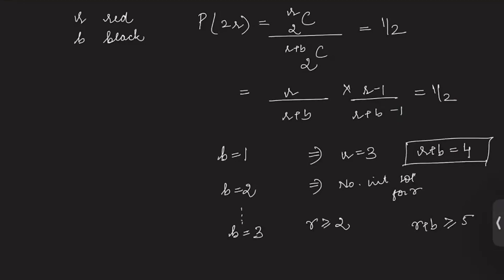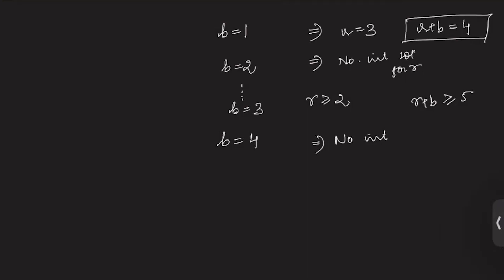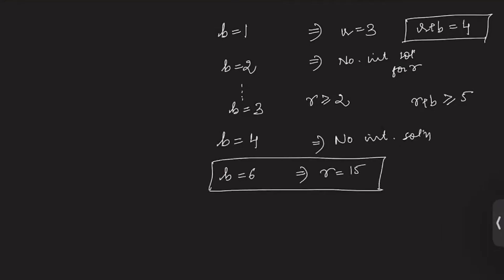For the second part, we need to check b equals to two, b equals to four, or b equals to six, because it is required that the number of black socks is even. Checking b equals to four gives no integer solution for r. Checking b equals to six gives r equals to 15 as an integer solution. So r equals to 15 and b equals to six becomes the solution for the second part.